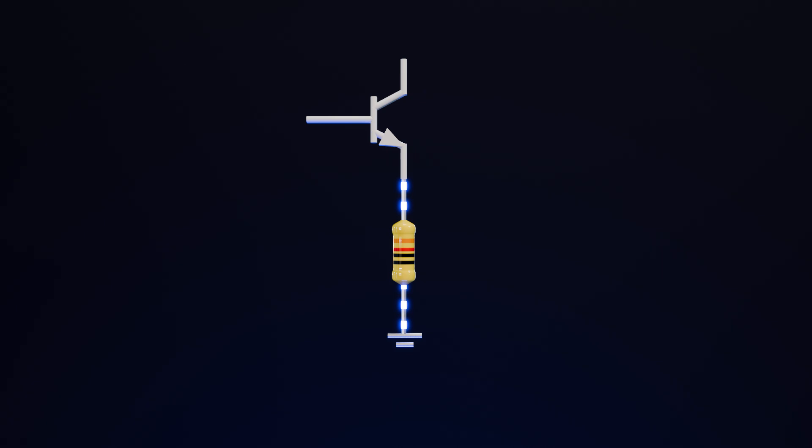So let's adjust the base current in a way so that we can get 1 milliamp of current through this 10,000 ohms resistor. We will achieve a voltage of 10 volts.